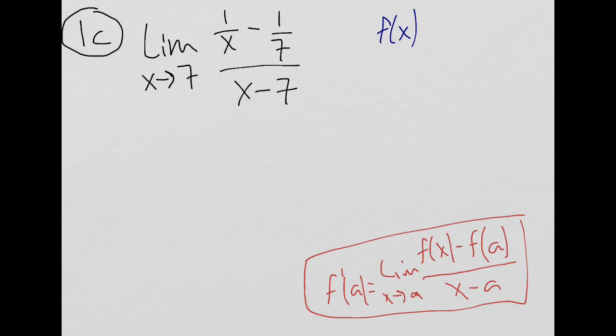So you should be able to identify that f of x in this case is 1 over x, which I am going to go ahead and write as x to the negative 1. And you should also identify that we are looking at a equal to 7 in this case.